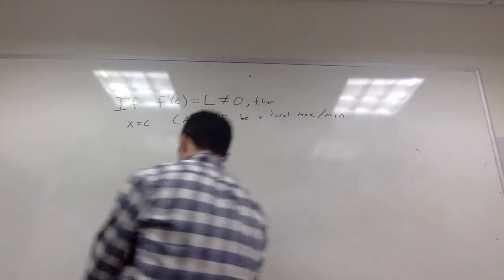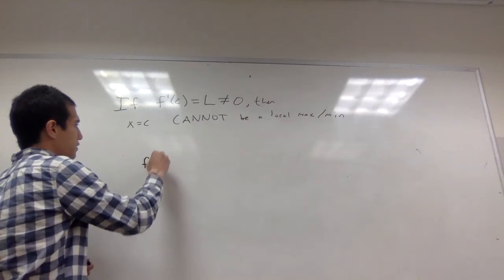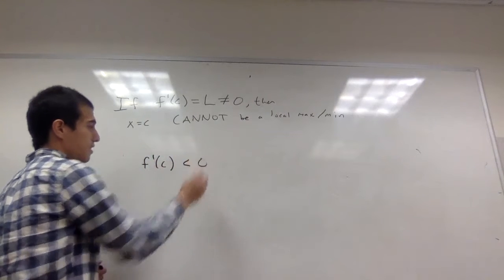So to show this, let's assume that the derivative exists, and let's say it's negative, so let's assume that f'(c) is strictly less than zero.